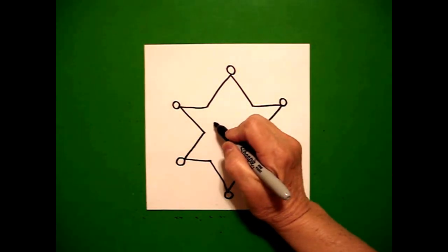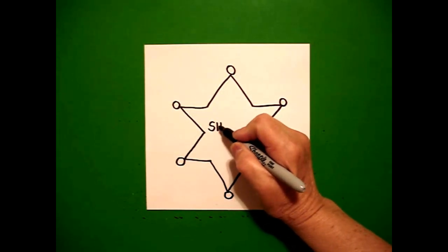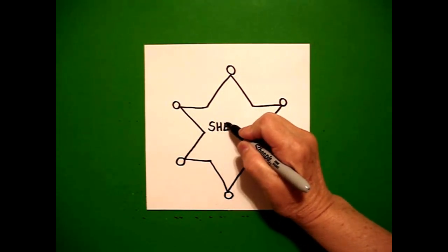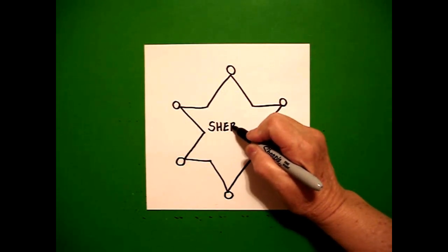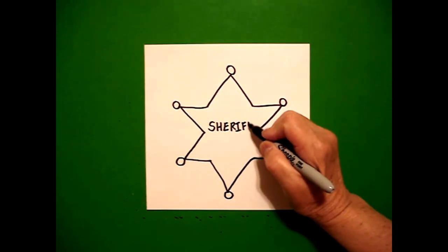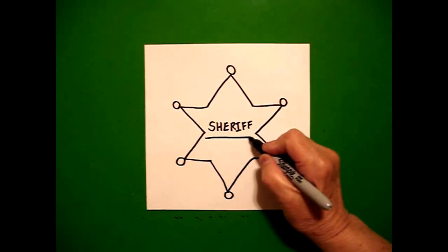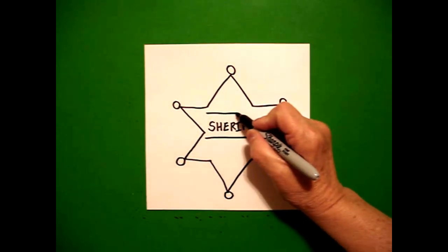Now I come in and I spell sheriff. I'm going to do it all in uppercase letters, S-H-E-R-I-F-F. I'm going to draw a straight line underneath and a straight line on top.